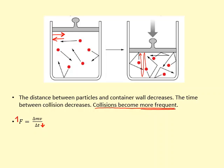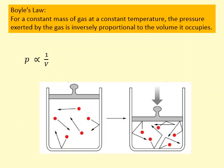This causes the force to increase, and if the force increases, the pressure increases. Boyle's law states that for a constant mass of gas at constant temperature, the pressure exerted by the gas is inversely proportional to the volume it occupies, which is shown in this equation: P is inversely proportional to V.